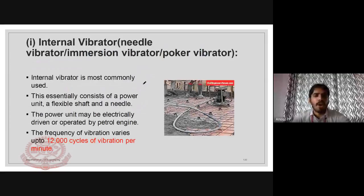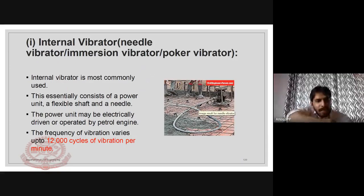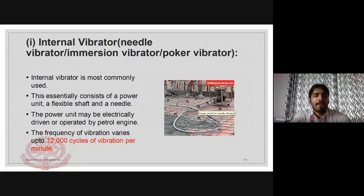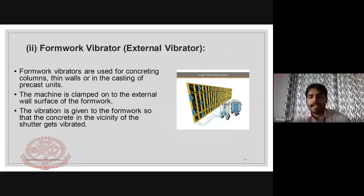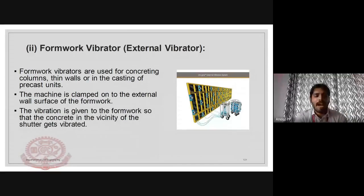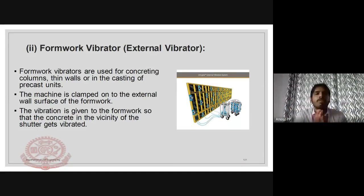The internal or needle vibrator is the most commonly used vibrator in India. The needle is inserted into the concrete — this is used for slabs and structural members. It produces vibrations of around 12,000 cycles per minute, which compacts the concrete. The formwork vibrator vibrates the formwork itself so the concrete against it gets compacted.